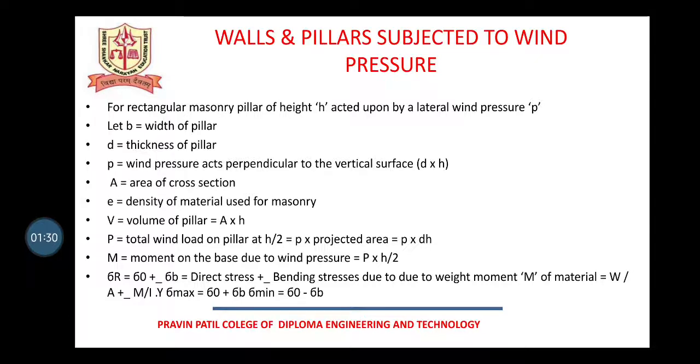P that is total wind load on the pillar at h by 2. That is also equal to p multiplied by projected area, which is equal to p into dh. M will be the moment on the base due to wind pressure. And again, resultant stress will be σ₀ plus minus σᵦ. That is, direct stress plus minus bending stress due to the weight moment M of the material.